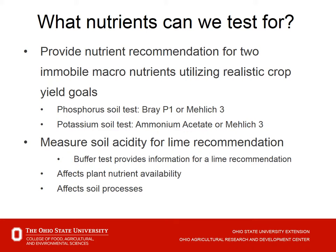So what nutrients can we test for? Our real goal is to provide recommendations for our two major macronutrients — phosphorus and potassium — and we do that using a soil test. In Ohio we've used a Bray P1 as the soil test to calibrate for the tri-state fertility recommendations. But today a cheaper, easier-to-run test is used in most of our labs, and that's the Mehlich 3 test for phosphorus.